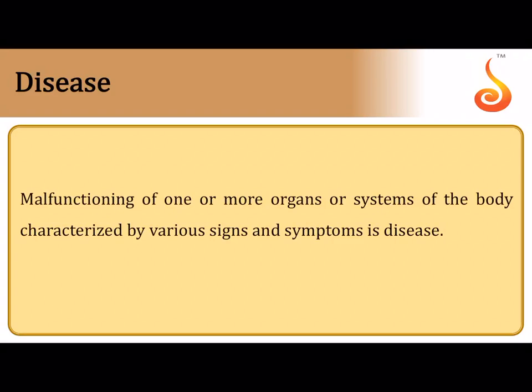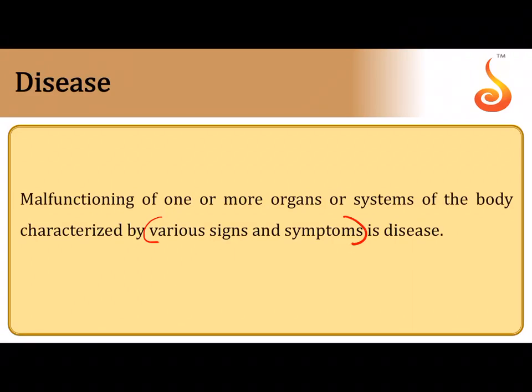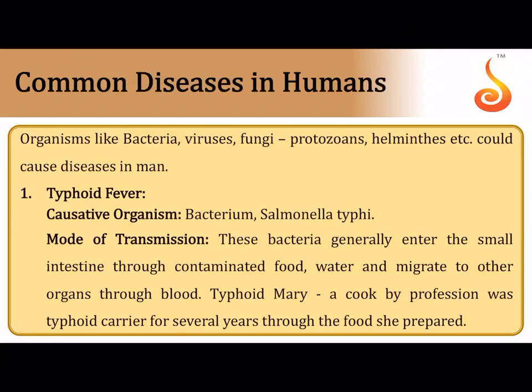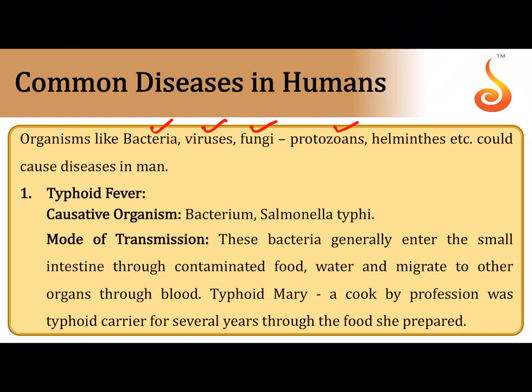Disease is characterized by malfunctioning of one or more organs or systems in the body, generally identified by various signs and symptoms. Disease-causing organisms are referred to as pathogens. We will now discuss diseases caused by pathogens such as bacteria, viruses, fungi, protozoans, and worms — including both roundworms and flatworms.